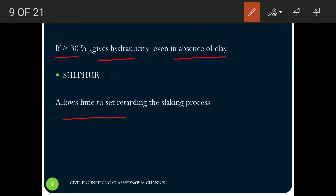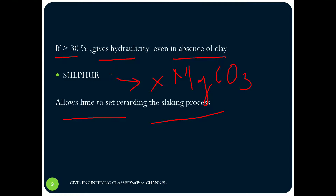The next ingredient is sulfur. It allows the lime to set by retarding the slaking process. Sulfur is mainly for the setting — it prevents the slaking process. The function of sulfur is exactly opposite to magnesium carbonate: magnesium carbonate helps in slaking by preventing the setting process. So these four are the main ingredients of lime.